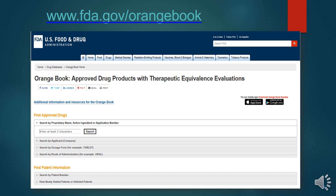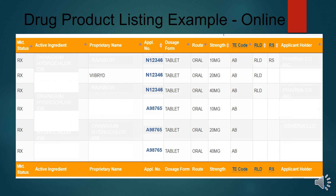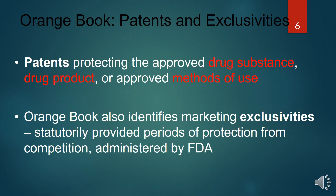The drug product listing is available online. For example, searching for a drug such as amphetamine hydrochloride shows proprietary names, application numbers, dosage forms, routes of administration, strength, code, and applicant holder details. This helps in obtaining information about patent and exclusivity for approved drug products.